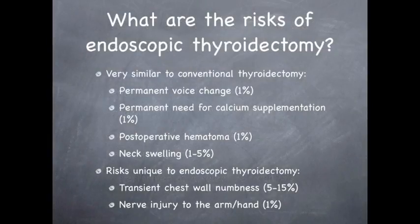What are the risks of endoscopic thyroidectomy? The risks are very similar to that of conventional thyroid surgery. There is a 1% chance of a permanent voice change, a 1% chance of needing to take calcium on a daily basis due to parathyroid dysfunction, a 1% chance of post-operative bleeding leading to hematoma, and 1-5% of patients will experience some neck swelling. There are some risks unique to the endoscopic approach, including transient chest wall numbness in 5-15% of patients, and nerve injury to the arm or hand leading to numbness in 1%. This last complication is infrequent and rare.